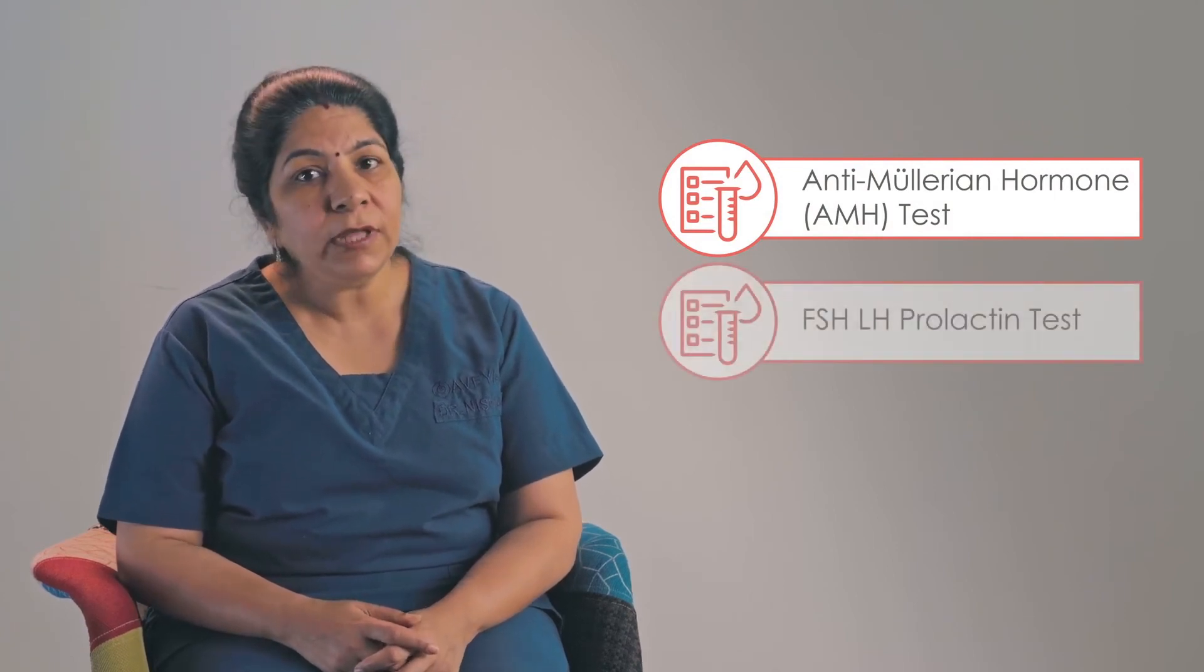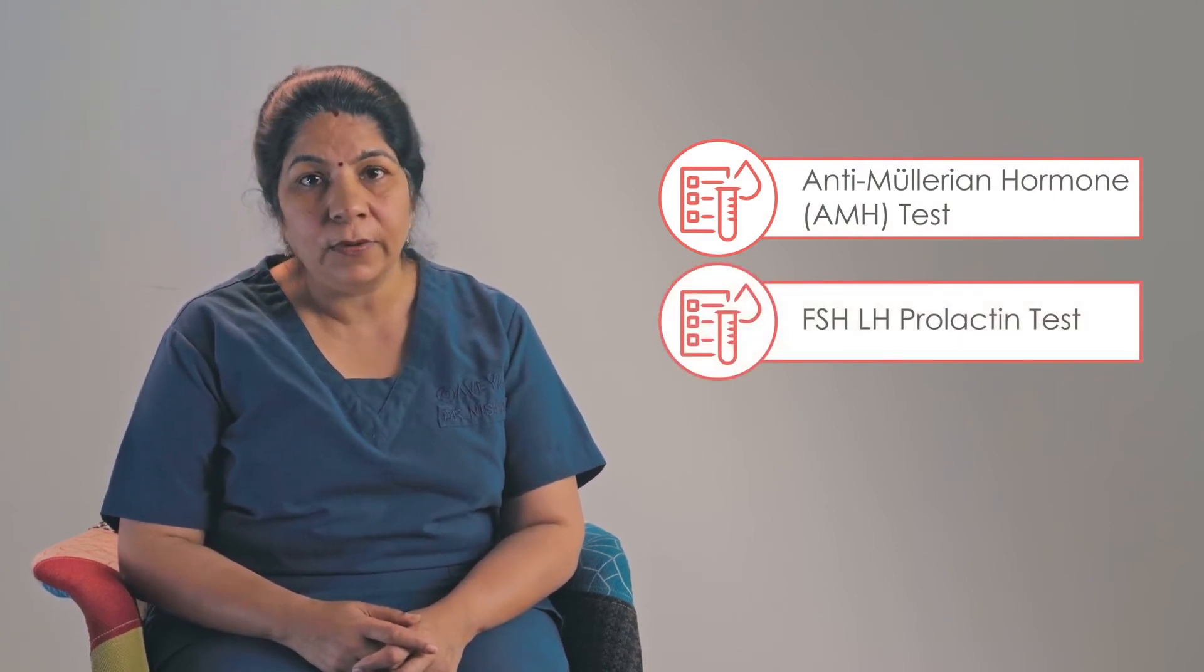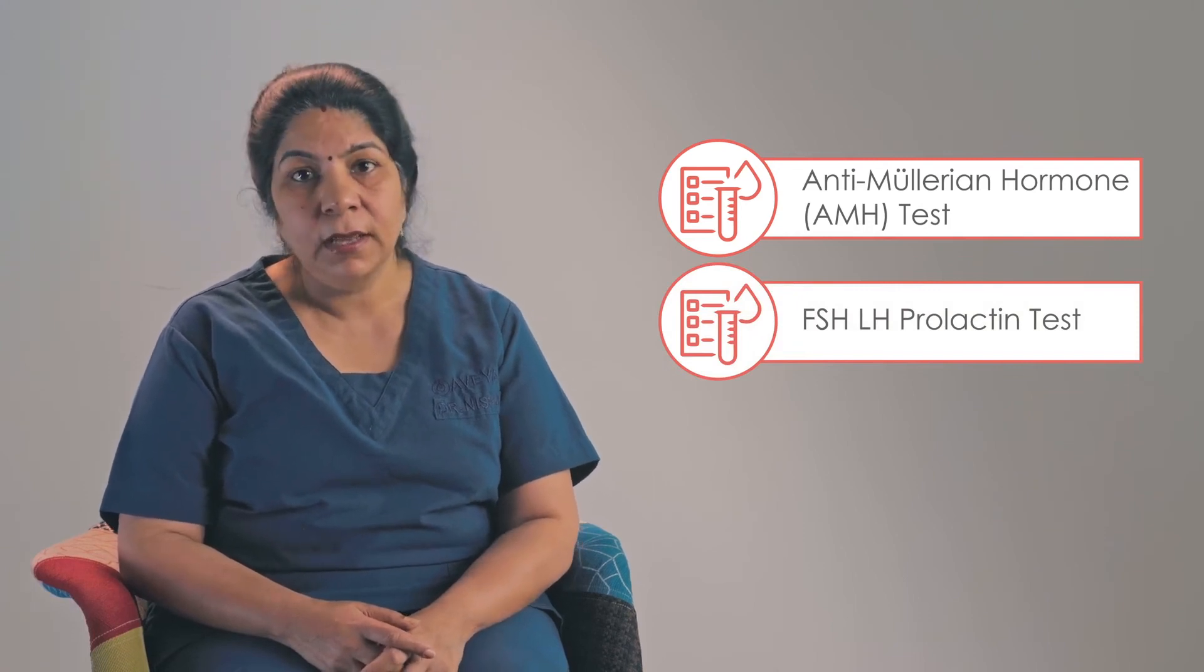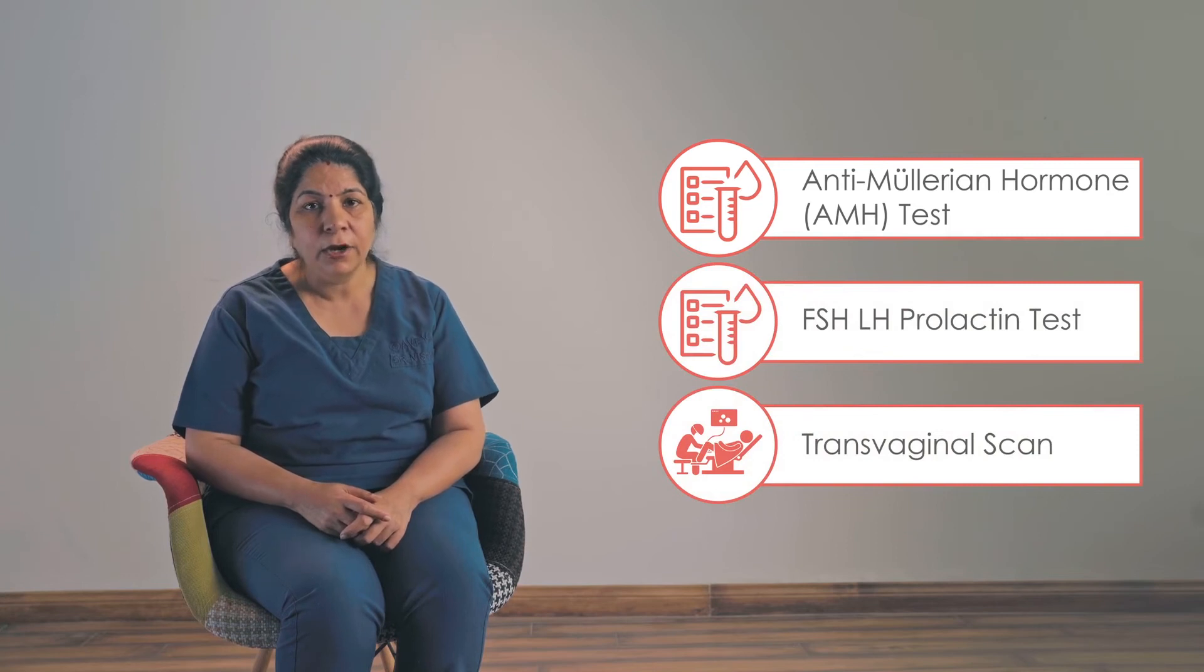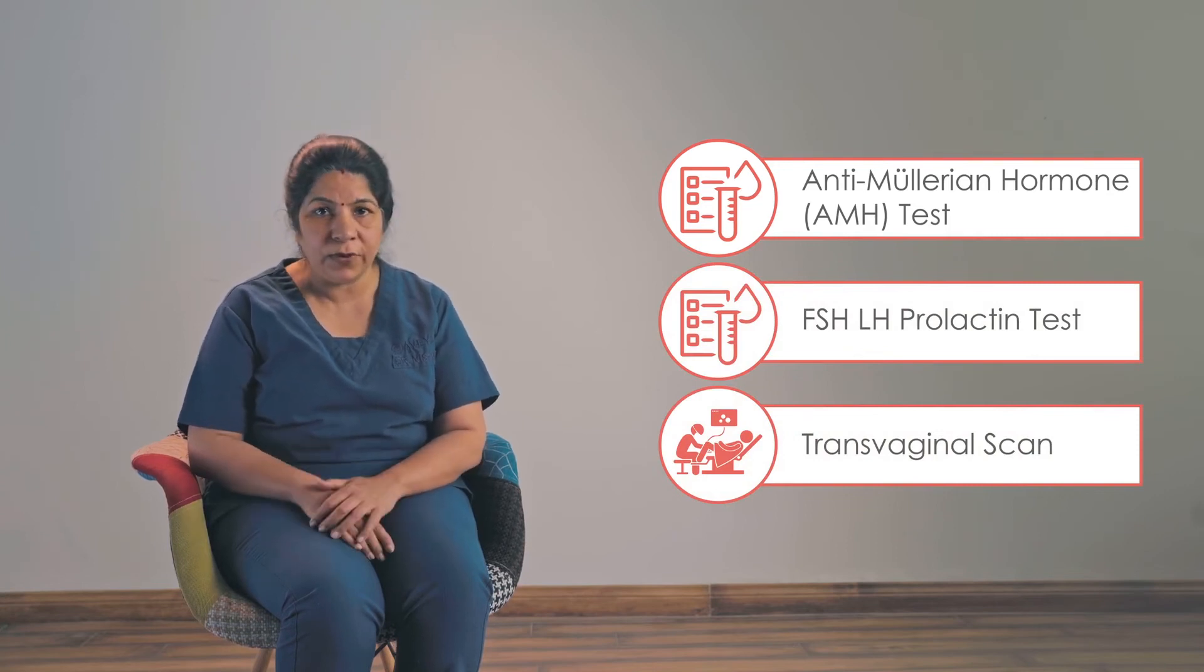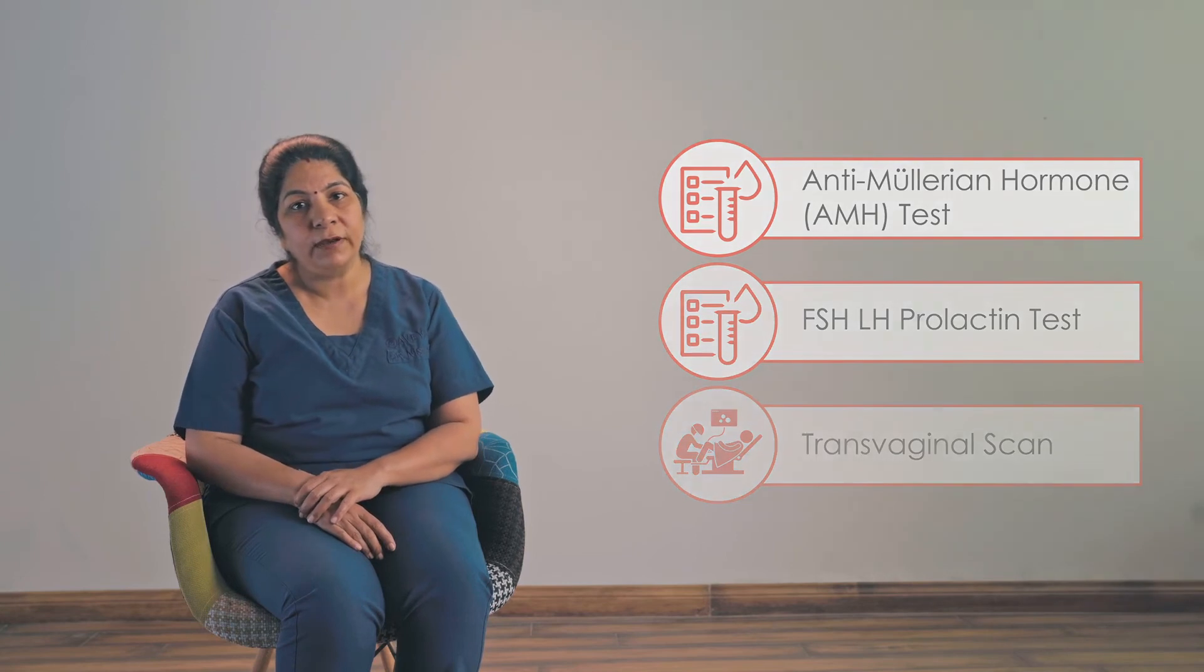There are three ways to diagnose low ovarian reserve. Number one, you can go for a blood test. You can check the AMH value on any day of your cycle. You can do the FSH, LH, and E2 value on the second day of your periods. You can get a simple thing like a transvaginal scan done to know the number of eggs in your ovaries, either of your ovaries, to know about low ovarian reserve.